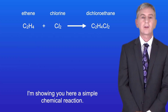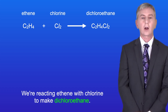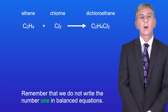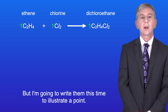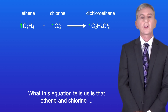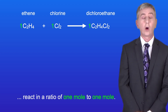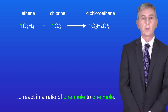I'm showing you here a simple chemical reaction. We're reacting ethene with chlorine to make dichloroethene. Remember that we do not write the number one in balanced equations, but I'm going to write them this time to illustrate a point. This equation tells us that ethene and chlorine react in a ratio of one mole to one mole.